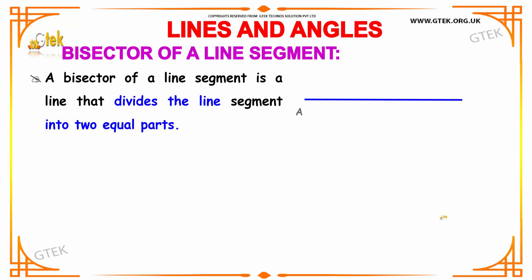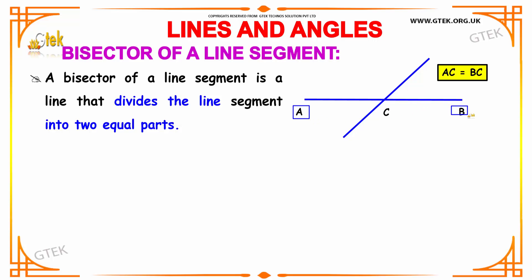Next we have the bisector of a line segment. A bisector of a line segment is a line which divides the line segment AB into two equal parts. Here this line divides AB into two equal parts at point C. So this is the bisector of the line segment, which makes AC equal to BC.